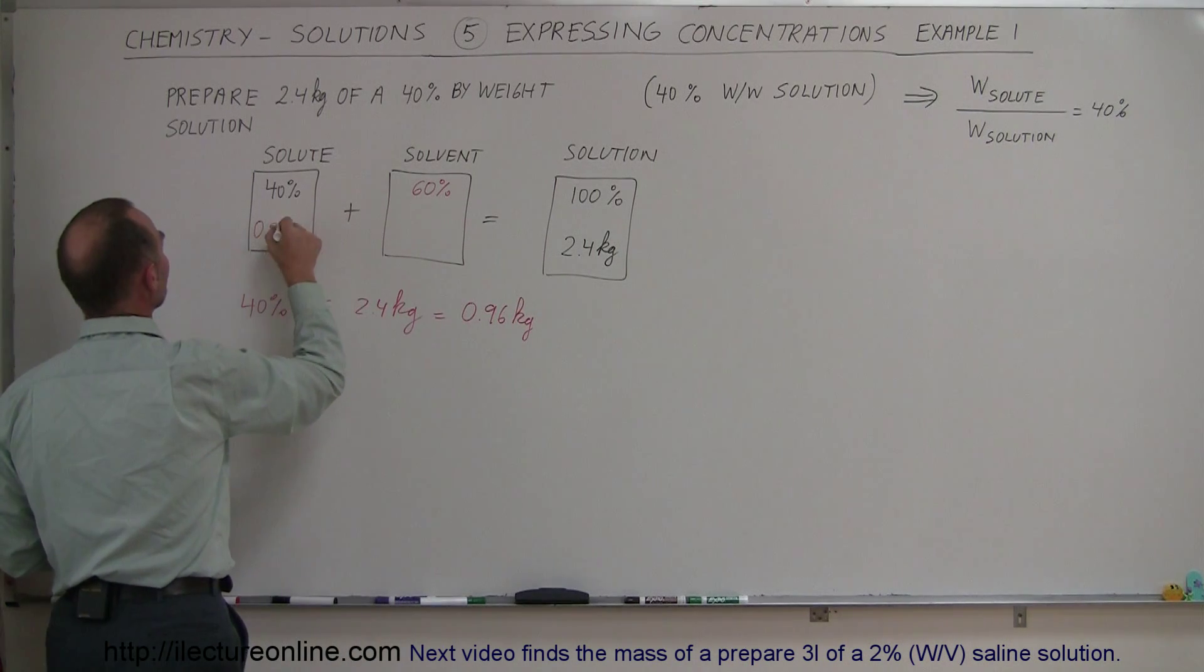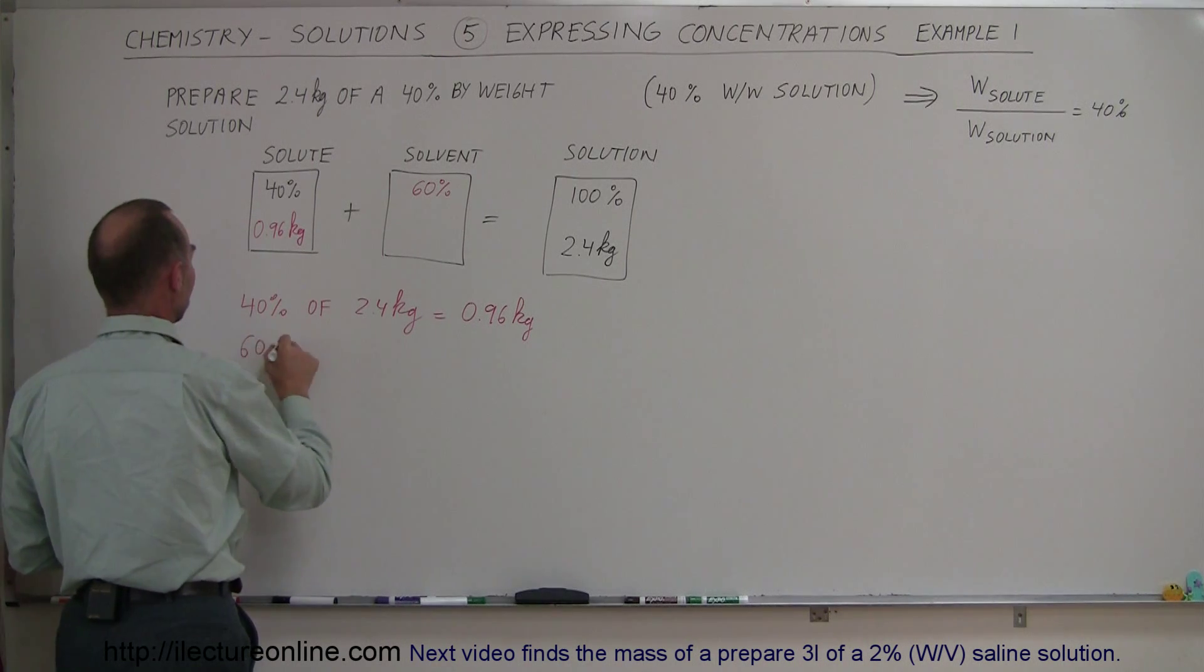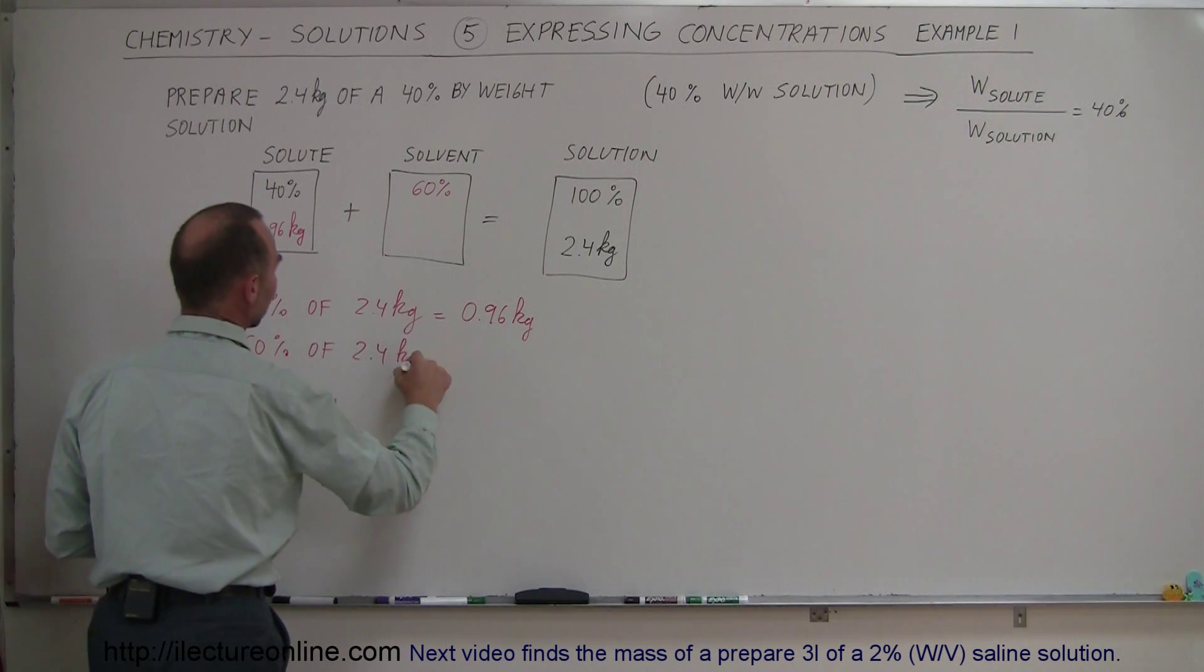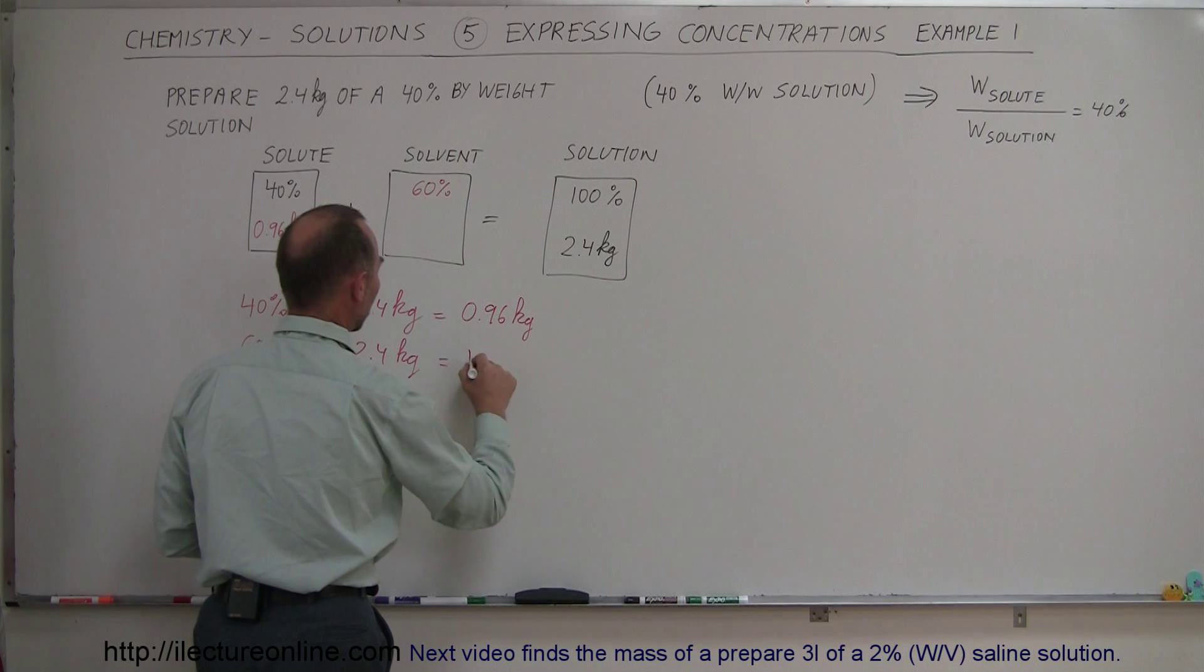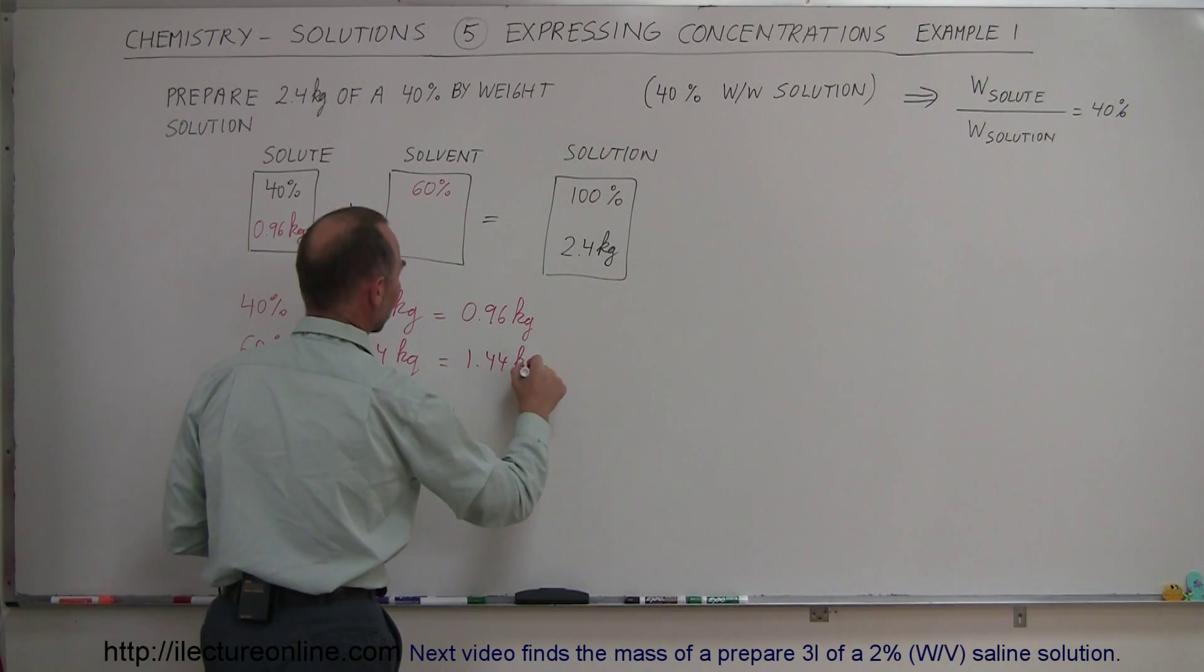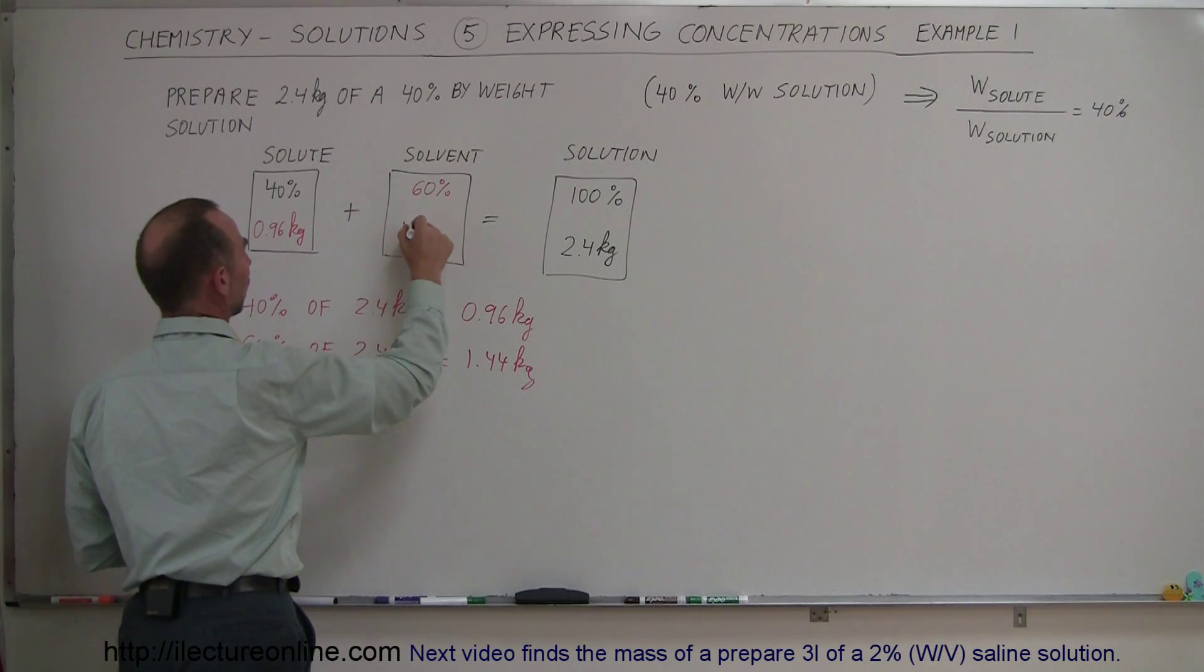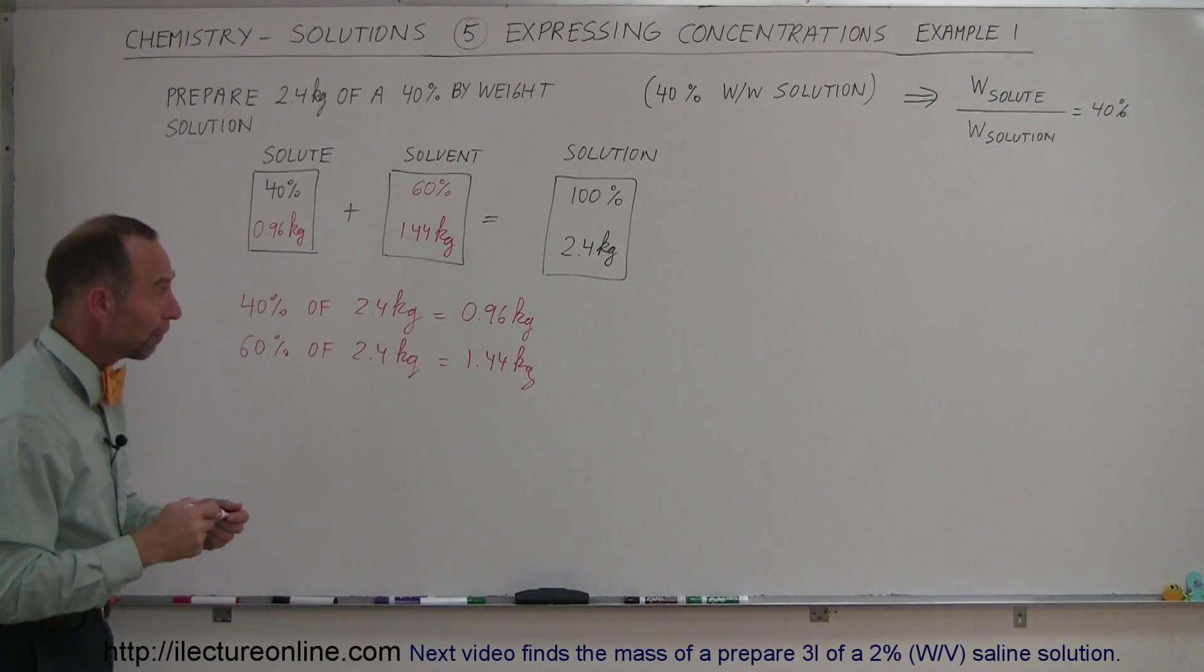0.96 kilograms becomes the solute, and then 60% of the 2.4 kilograms, 6 times 2 is 12, that would be 1.44 kilograms. 1.44 kilograms would be the mass of the solvent, and that is how we find the solution we're looking for.